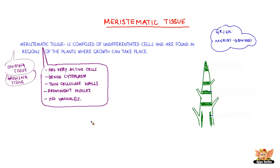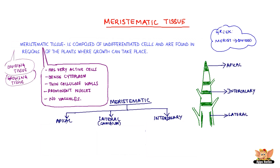Meristematic tissues are found in only certain regions on the plant. Based on the region where they are found, meristematic tissue is classified as apical meristem, lateral meristem or cambium, and intercalary meristem.